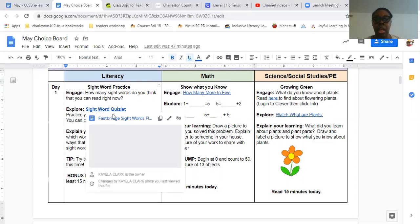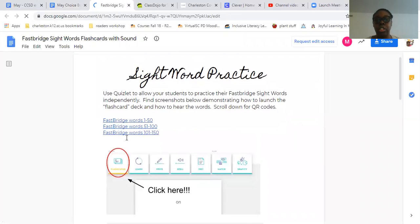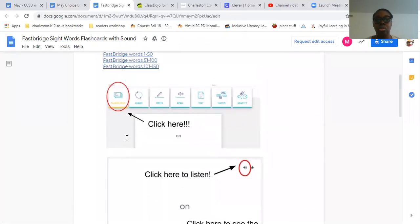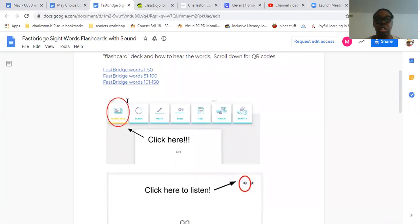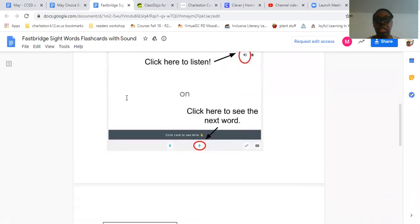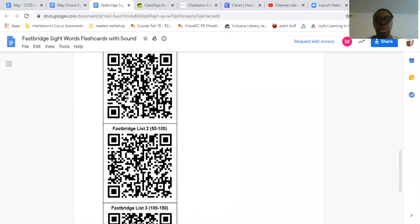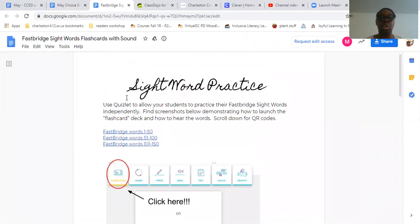So let's look at the Quizlet. This is coming from the FastBridge site, and it gives you the direction here on how to use it. So use Quizlet to allow the students to practice their FastBridge sight words independently. Find a screenshot below demonstrating on how to launch the flashcard deck and how to hear the words. You can scroll down for cue cards. So you're going to click on flashcards. You're going to listen. Click here to listen. And then here's the QR code that you can use to open them up.